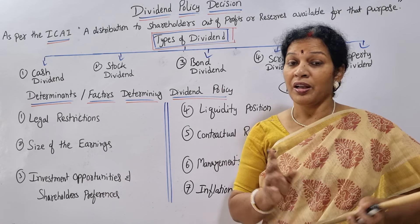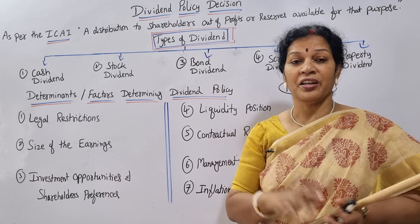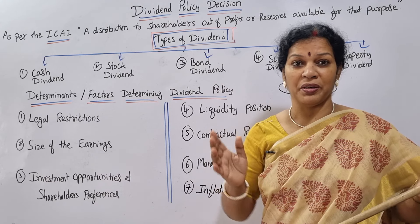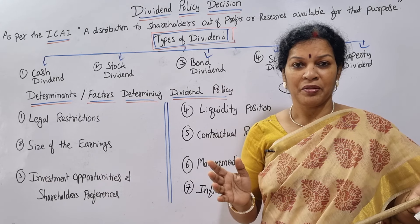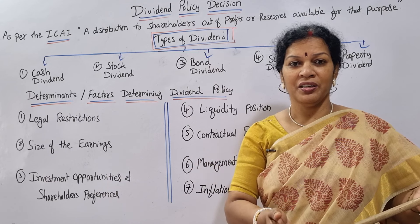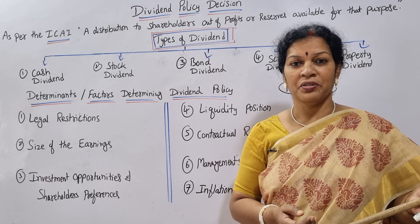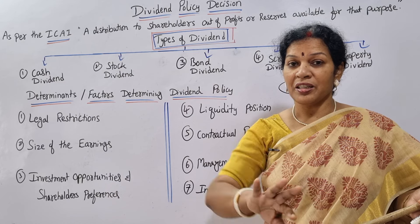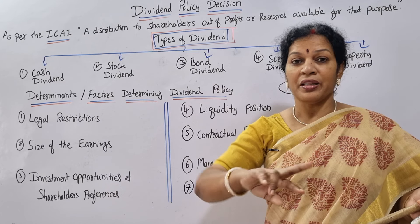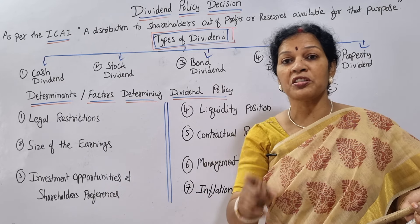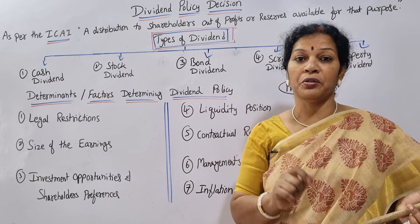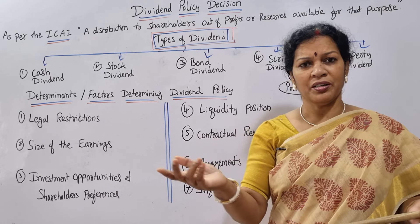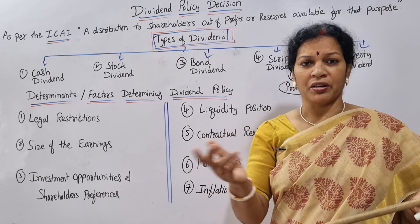The second factor is size of earnings. When earnings are less, the company cannot pay much dividend because if they distribute all the profit to shareholders, the company will be in a tough position if a crisis comes. Conversely, when the organization is very big and profits are high, that allows more liberalization in distributing dividends. So the size of earnings directly affects dividend decisions.